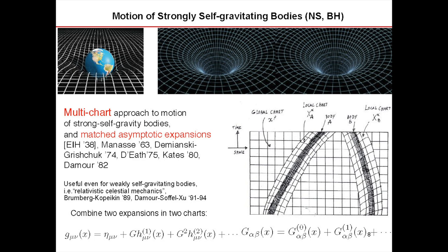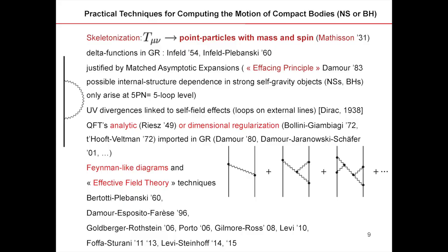To deal with this, you need a technique called matched asymptotic expansion, justified in the 80s, which combines two different approximation schemes — one near the black hole and one far from the two black holes. Although conceptually clear, it is technically very demanding. What is very useful is to prove another thing called skeletonization: the idea that you can, for all practical purposes, replace a black hole — a complicated structure — by a point particle with spin.